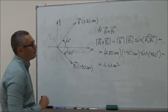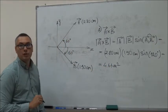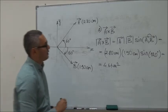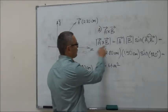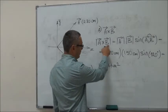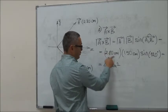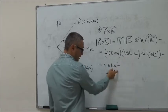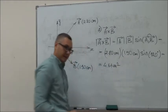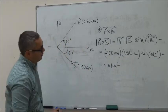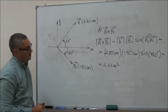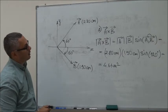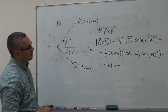That's the magnitude of the cross product. Note that because in a cross product we're multiplying two vectors which have dimensions of centimeters, the result is going to be centimeters squared.